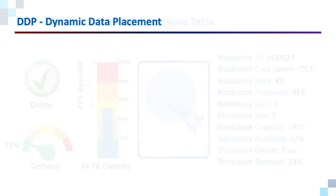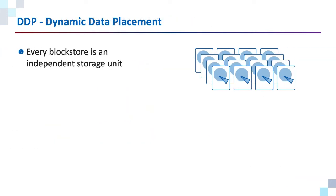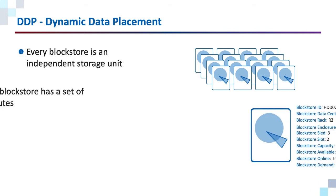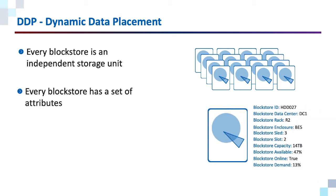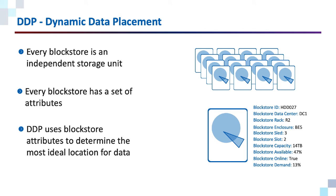Quick review: every block store is an independent storage unit, every block store has a set of attributes, and DDP uses those attributes to determine the most ideal location for object parts.